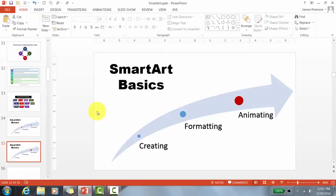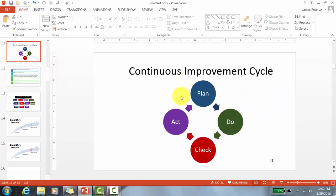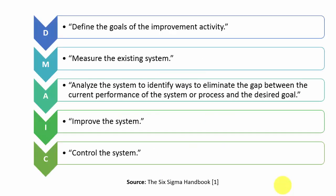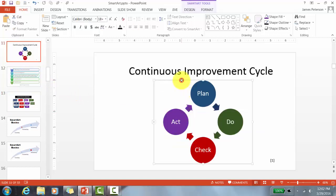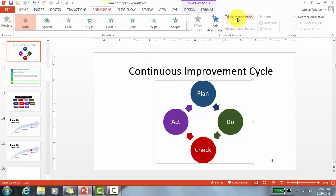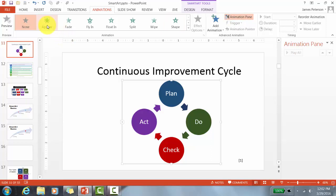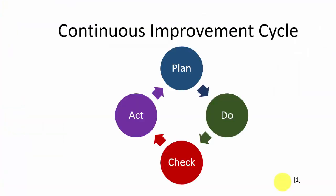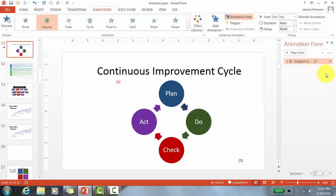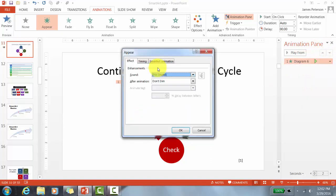Now let's move on to animating. I like to build complex slides gradually — I don't like all information to appear at the same time. I'll click on the SmartArt, go to Animations, and open the Animation Pane. I'll choose 'Appear' — for me, Appear is an instantaneous animation and my first choice. When I preview, everything still comes up at the same time, so I need to adjust.